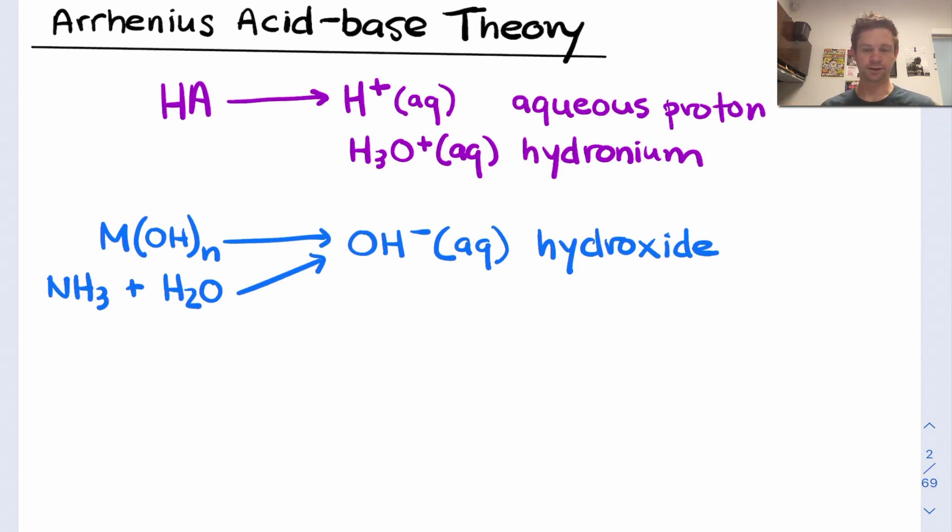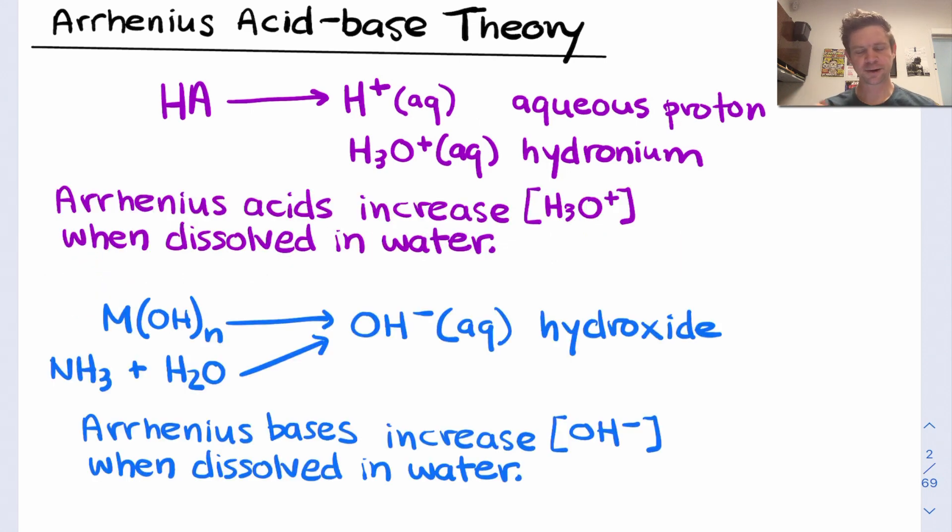Both of these we're going to consider Arrhenius bases: these metal hydroxide salts, which are your classic Arrhenius bases, as well as weak amine bases like NH3 and derivatives, where other groups, primarily containing carbon, are replacing these hydrogens.